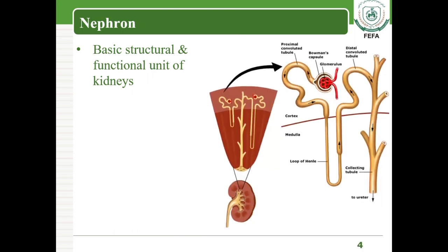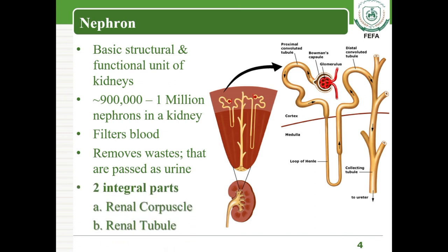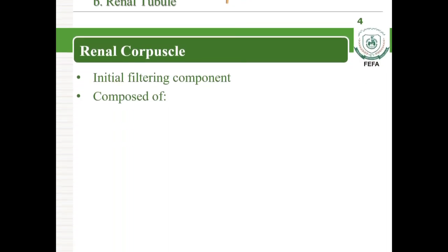Now we will explain the internal structure of the kidney. The nephron is the basic structural and functional unit of the kidney. Approximately one million nephrons are present in each kidney. The main function of the nephron is to filter the blood and remove various types of waste material, which is converted into urine.